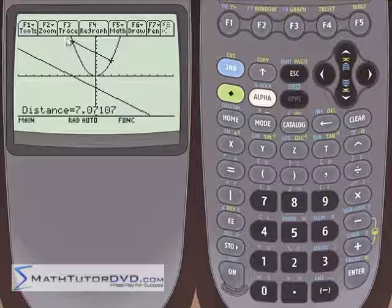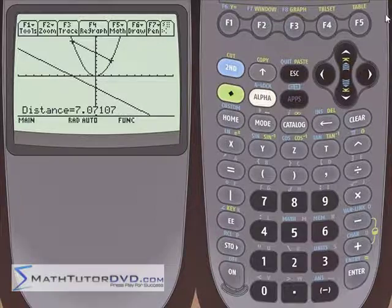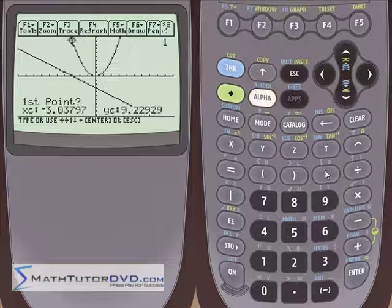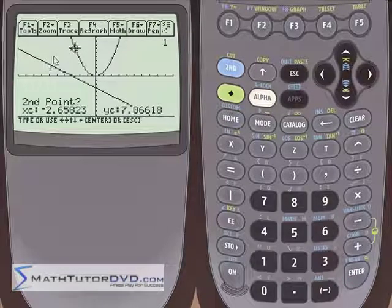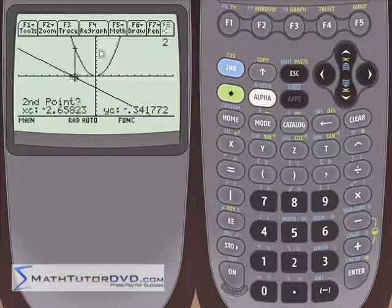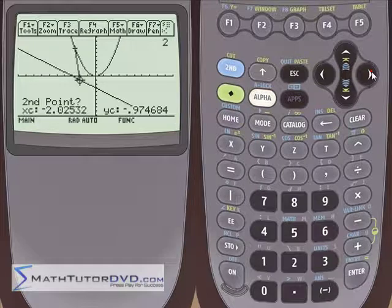But if you ever have a need to do a straight line distance like that it can be kind of useful. Now, the other thing is, it doesn't have to be two points on the same graph. We can go in here, number nine for distance, I can select my first point here or type it in. And then if I want to calculate to some point on this graph, I just hit down to snap me to the other graph, and I can select a point over here.